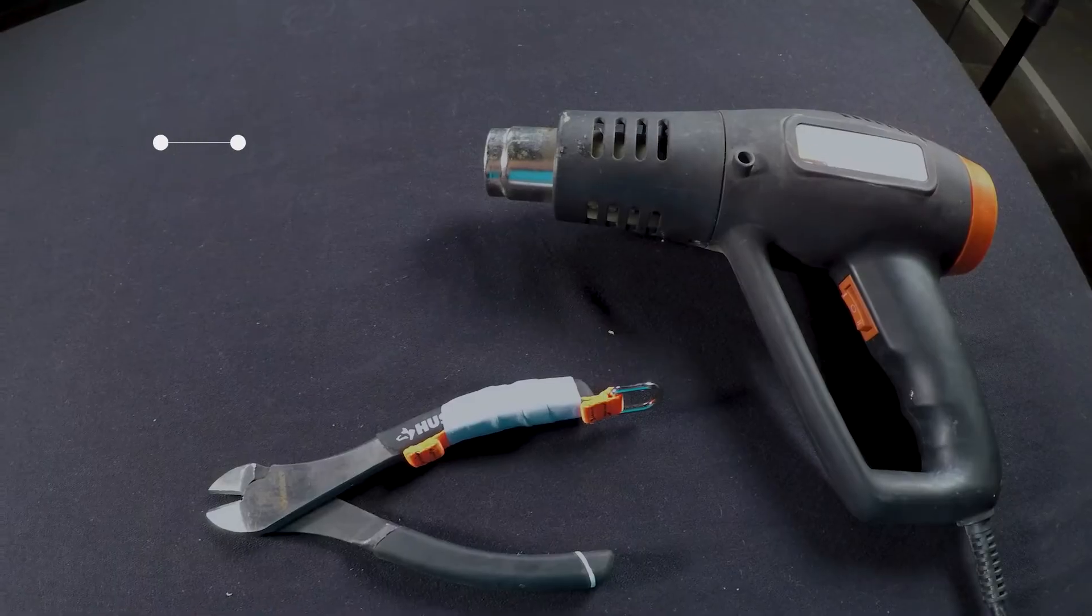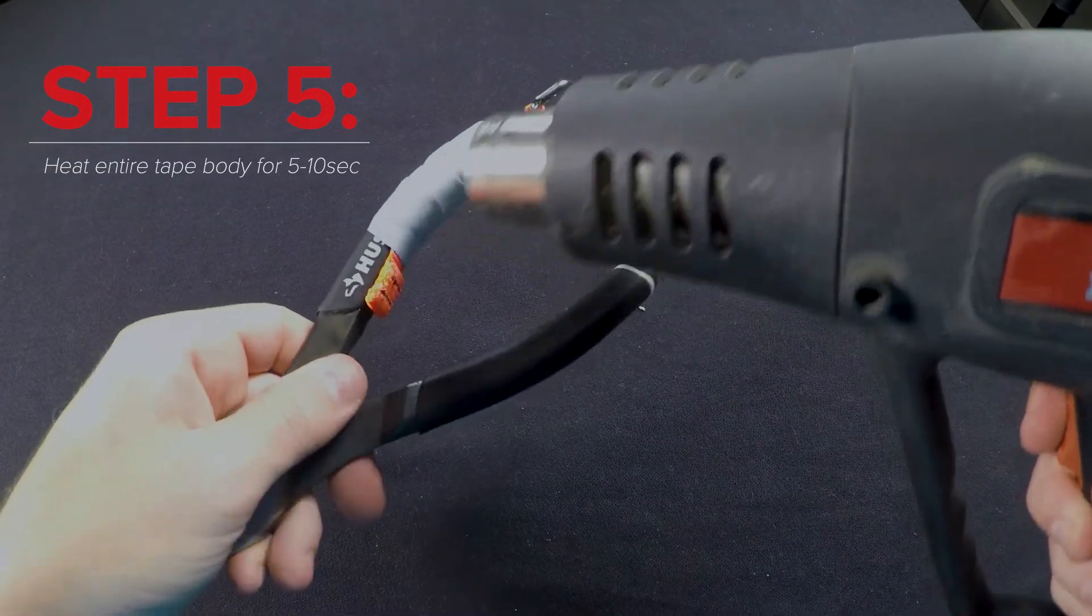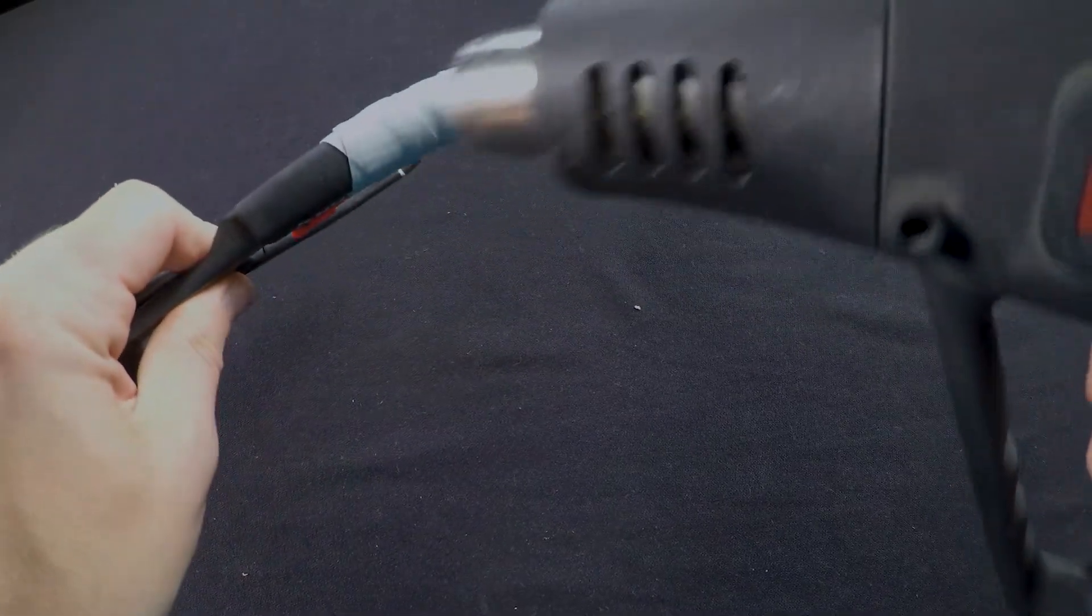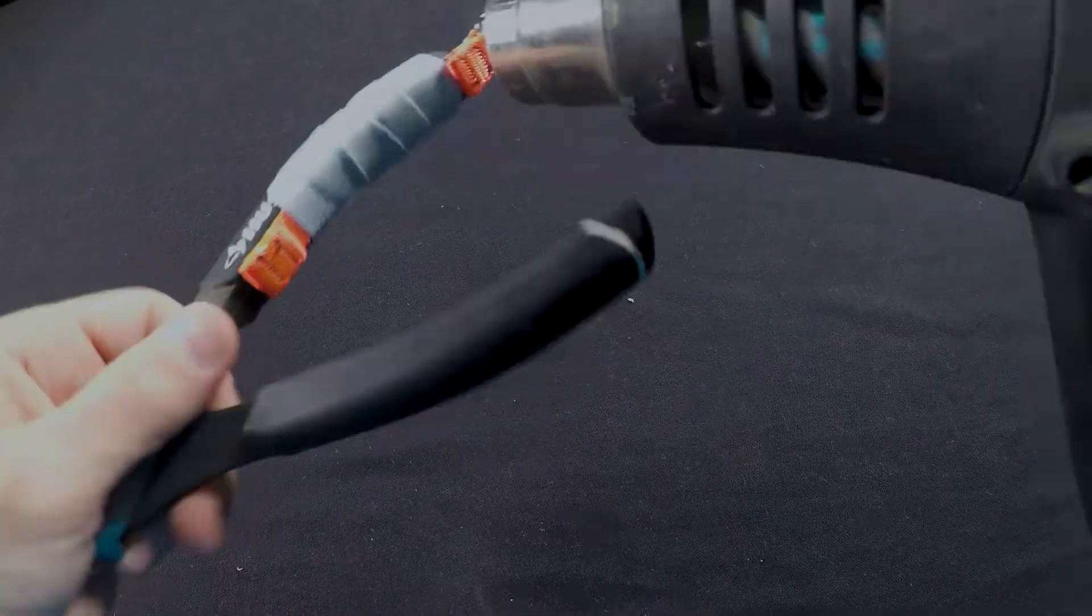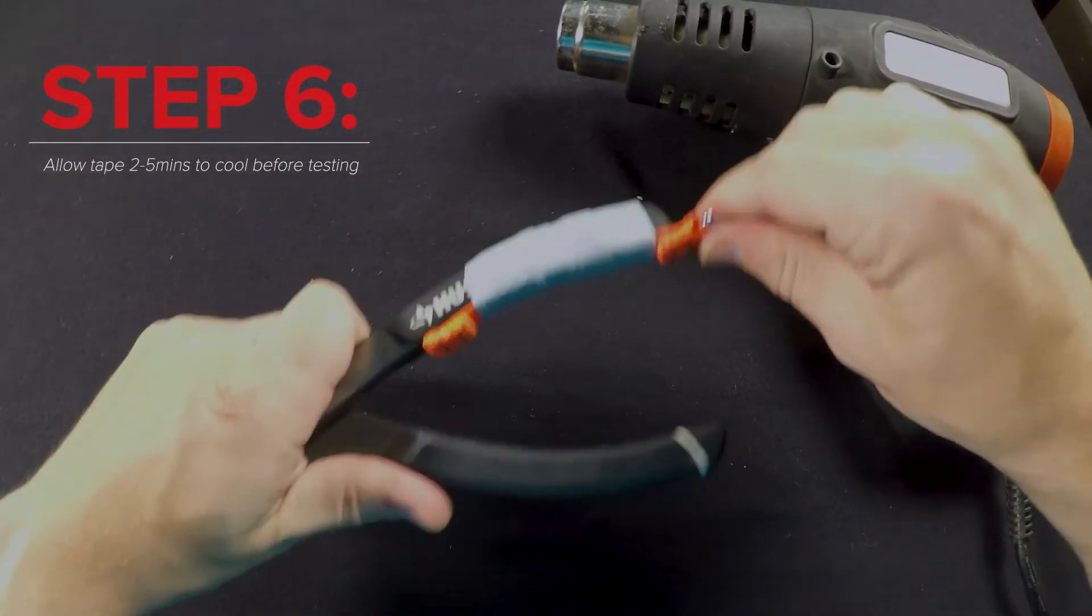Stretch the end of the tape trap to rewrap the handle over your existing wraps one more time. Once the end of the tape trap adheres to the tool, heat the entire body of the tape at the same temperature for five to ten seconds. Let the tape cool for two to five minutes before you test the tape.